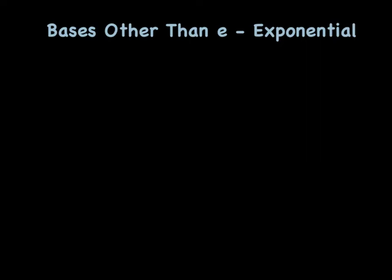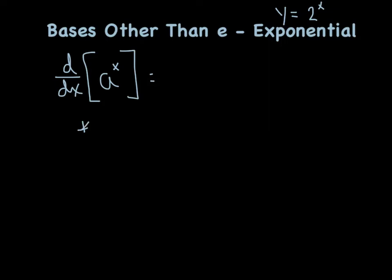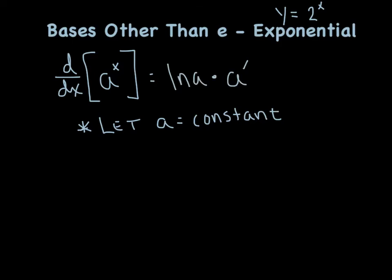One mini-lesson down, two to go. Now we're going to talk about bases other than e with regards to exponential functions. We've done a great job of deriving e to the x, and now we move on — can I derive something like 2 to the x or 5 to the x? We're going to jump right into our new rule. Let's derive a to the x, where a is a constant — imagine a equals 2, or 6, or 10. Our derivative is going to be the natural log of a times a to the x.